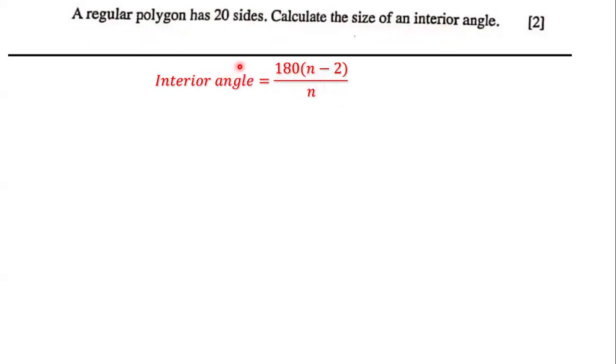Now notice what we have. We have the number of sides - the number of sides is 20. And so that is n. N is the number of sides. So we're going to substitute that into this equation.